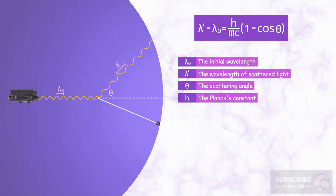H is Planck's constant, m is the mass of the electron, and c is the speed of light.